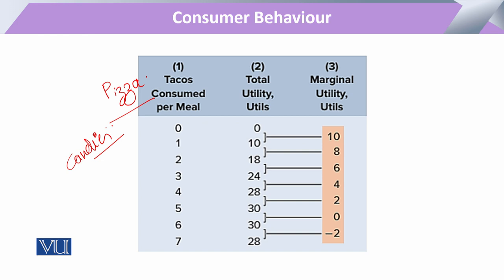So we say that when the consumer takes one unit, at that time, if zero units are taken then utility is also zero. Then if we count: he took 1 unit, 2, 3, 4 units. In this form, when he took one unit of any point, we suppose his total utility in utils came to 10.